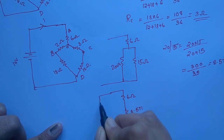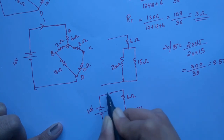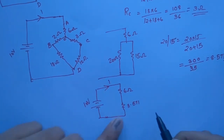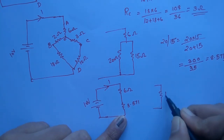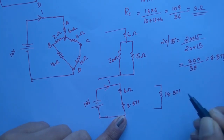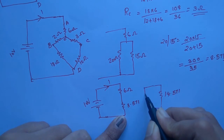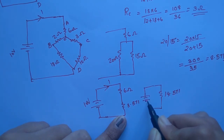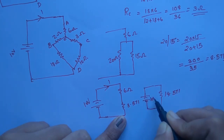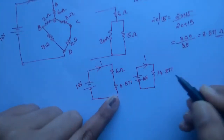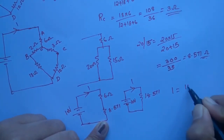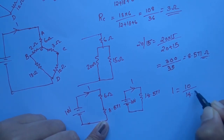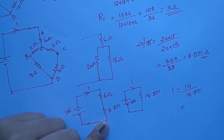We have 10 volts applied. The total resistance is 6 plus 8.571 equals 14.571 ohm. This is the 10 volt source and the current I is to be found from this total circuit.